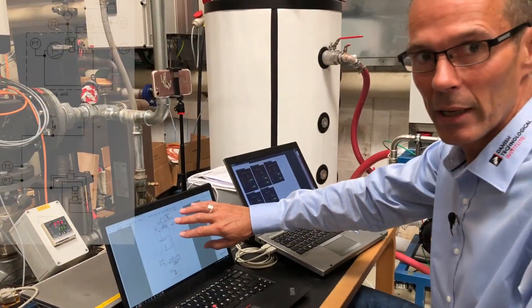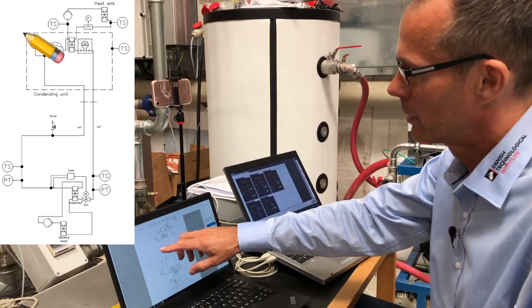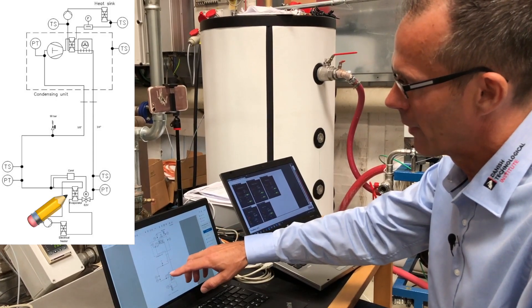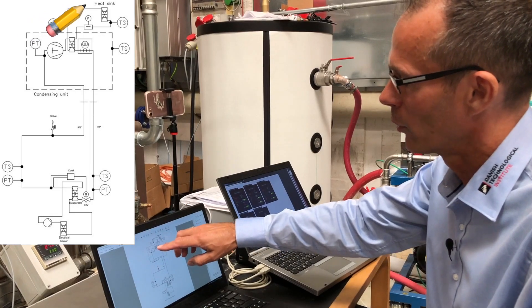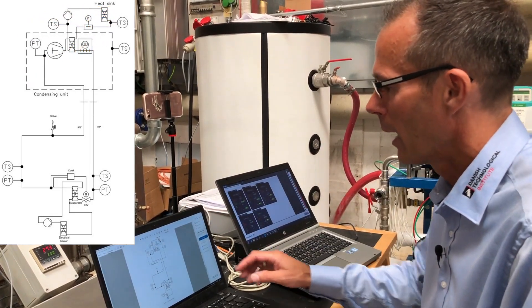Hello. This is a P&I diagram for the test setup. The diagram shows the condensing unit which has been testing and it shows the evaporator that is loading the condensing unit.